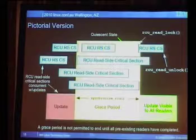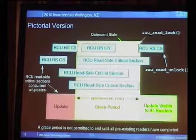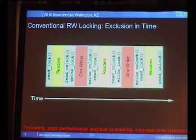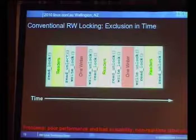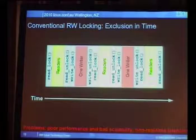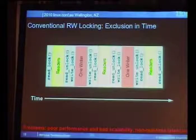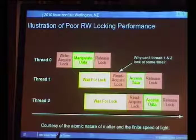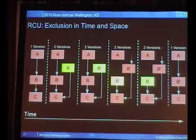In contrast, with conventional reader-writer locking, time is broken up into phases: read versus write. In RCU, while the writer is there, you can start new readers — you have to finish old writers, but you can start new readers. Where reader-writer locking breaks time into phases, RCU splits things across time but also across space, meaning across the address space.